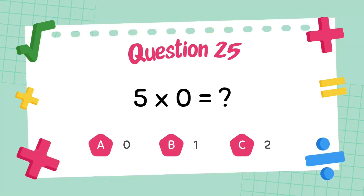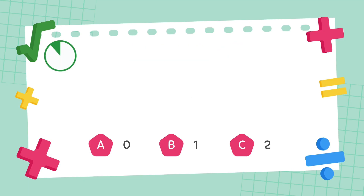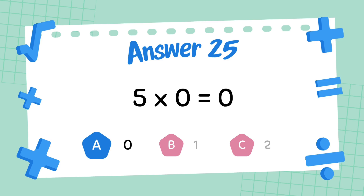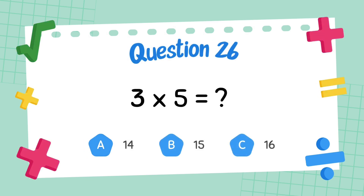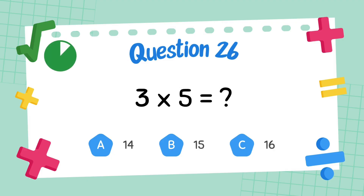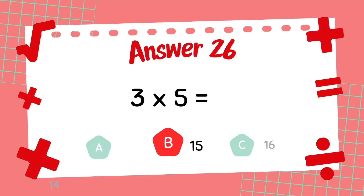What is 5 multiply 0? The answer is 0. What is 3 multiply 5? The answer is 15.